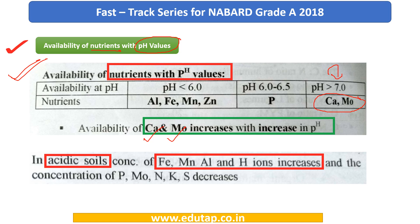In acidic soils, that is when the pH is less than 6, the concentration of iron, aluminium, manganese, and zinc increases. So basically these nutrients are present or available in soils that have lower pH or are acidic in nature. In the exam, there can be a question regarding the availability of various nutrients varying with pH values. Kindly pause the video and make sure you know at what pH which nutrient concentration increases or decreases.